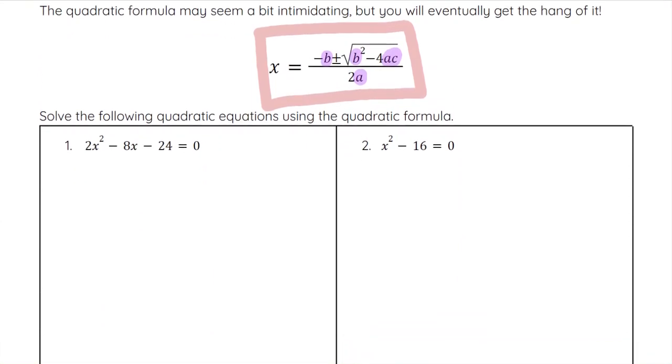There is a little song to help remember it. If you know Pop Goes the Weasel, it goes to that theme: x equals opposite b plus or minus the square root of b squared minus 4ac all over 2a. I will often still sing that in my head as I write it out, and that can help you memorize the quadratic formula.